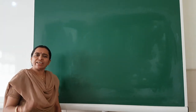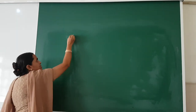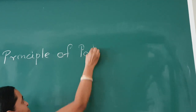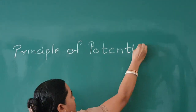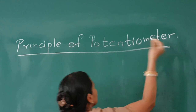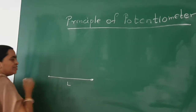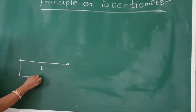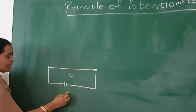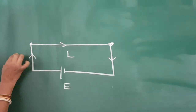This is a device to measure very small resistance and voltages. Let us see the principle of the potentiometer. Suppose you have a wire of length L. We connect it to a power supply E, and current flows through the wire.